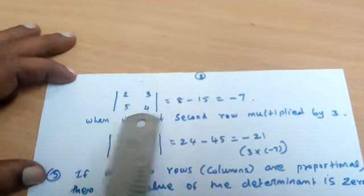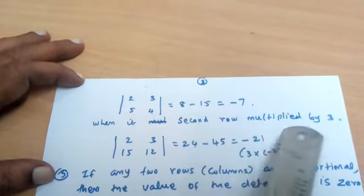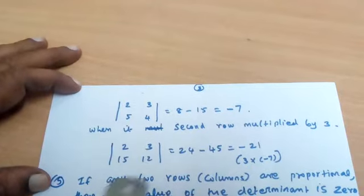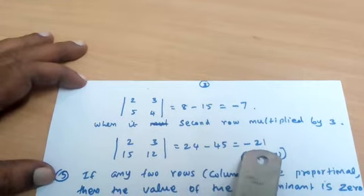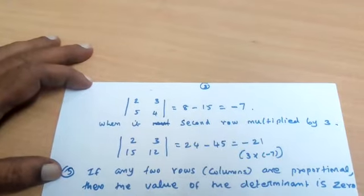The value of the determinant is minus 7. When its second row is multiplied by 3, which gives 15 and 12, the value is minus 21, the same multiplied by 3.